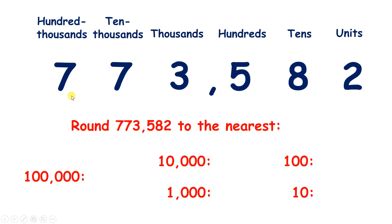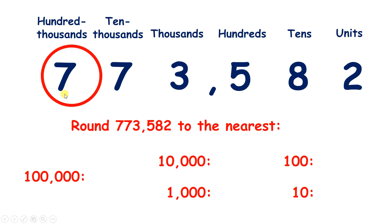Now we have 773,582. Rounding to the nearest 100,000, we find our place value, look to the right — it's 5 or more, so we need to raise that 7 to an 8, and turn all the numbers to the right of that 100,000 column into zeros — so we have 800,000.